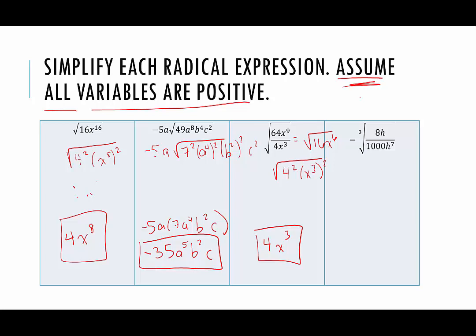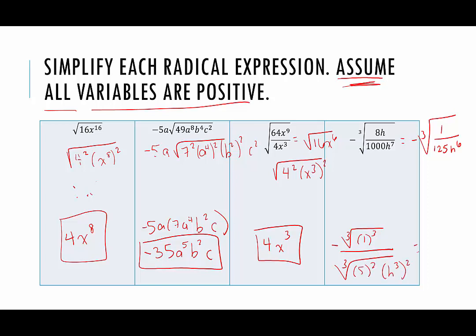In our next example, we have the negative cubed root of 8h over 1000h to the 7th. We can simplify: 8 goes into 1000 125 times, and h goes into h to the 7th, h to the 6th times — so we get a numerator of 1. We have the negative cubed root of 1 over 125h to the 6th. The cubed root of 1 is 1, 125 has a cubed root of 5, and h to the 6th is h cubed squared — so the cubed root is h cubed. That gives us negative 1 over 5h cubed.